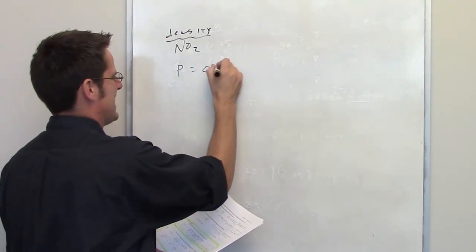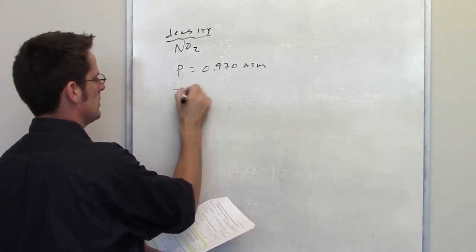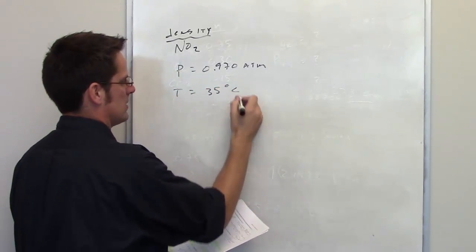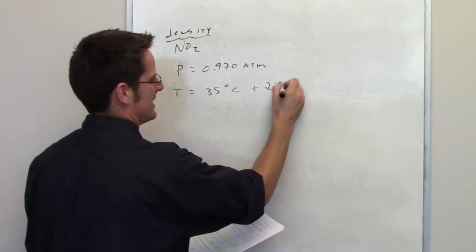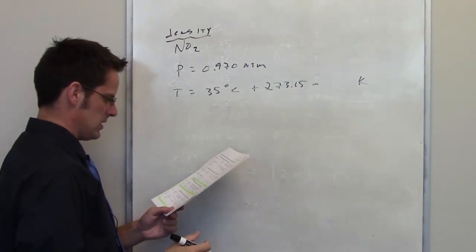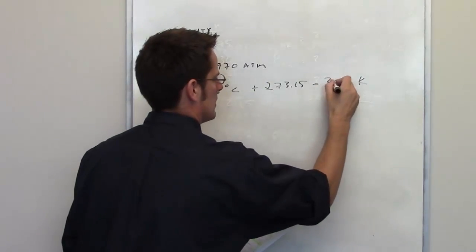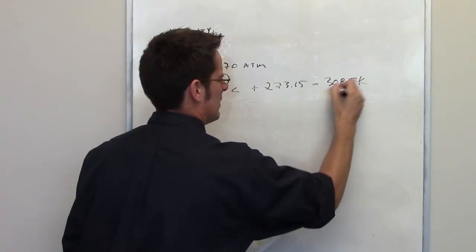The pressure we're given is 0.970 atmospheres, and the temperature is 35 degrees Celsius. Now, I'm going to want to convert that to Kelvin, so I'll just get used to doing that right off the bat. 35 plus 273.15 gives me 308.15 Kelvins.